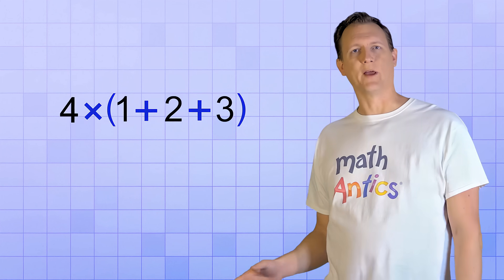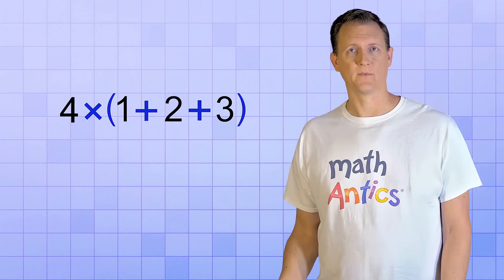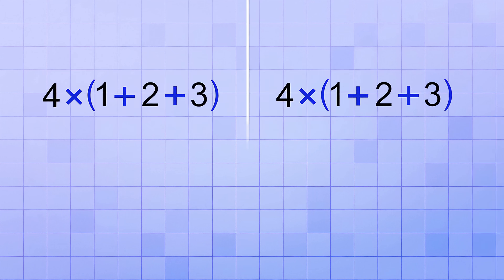Like in this problem. We have to multiply 4 by the group 1 plus 2 plus 3. Again, let's try simplifying this both ways. In the first way, we start by simplifying what's in the group. 1 plus 2 plus 3 equals 6. And then we multiply 4 times 6, which gives us 24.